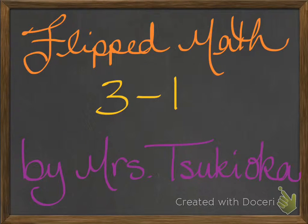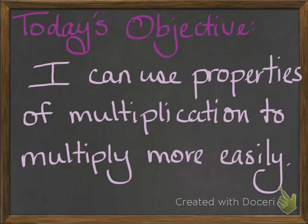Hi, 5th grade. It's Mrs. Kiyoko with your flipped math lesson for today, 3-1. Today's objective is: I can use properties of multiplication to multiply more easily. So today we're going to be working on these properties of multiplication, and these are similar to the properties of addition because multiplication and addition are related.